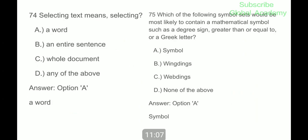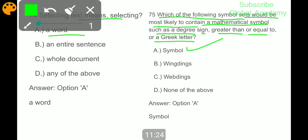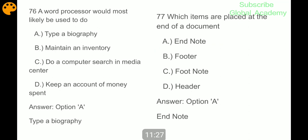Selecting text means selecting a word. Which of the following symbol sets would be most likely to contain a mathematical symbol such as degree sign, greater than or equal to, or a Greek letter? Symbols. A word processor would most likely be used to type a biography. Which items are placed at the end of document? End note.